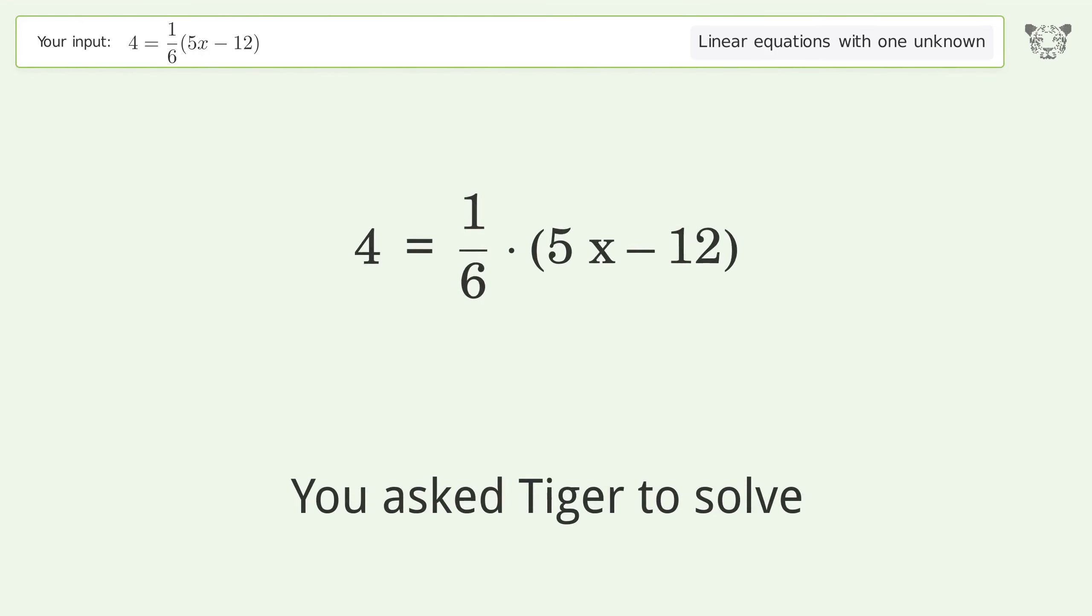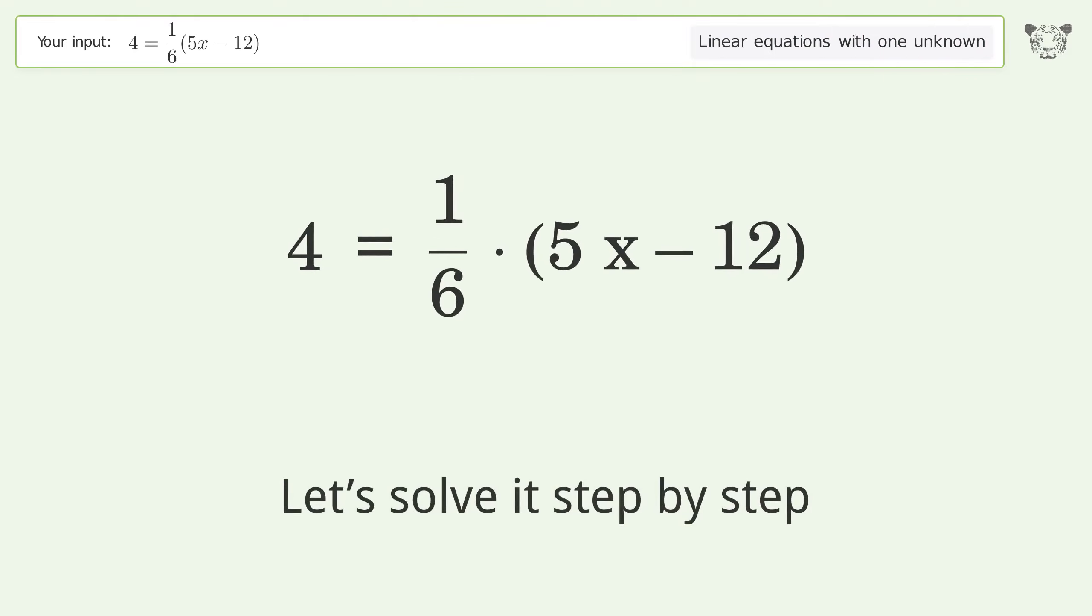You asked to solve this linear equation with one unknown. The final result is x equals 36 over 5. Let's solve it step by step. Simplify the expression, multiply the fractions.